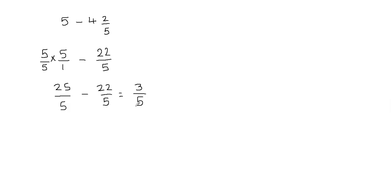Since this is a proper fraction, I cannot reduce it anymore because 3 and 5 are both prime numbers. So 3 fifths is my final answer. Some students are confused about why I multiplied by 5 over 5, so I'm going to show a different method.